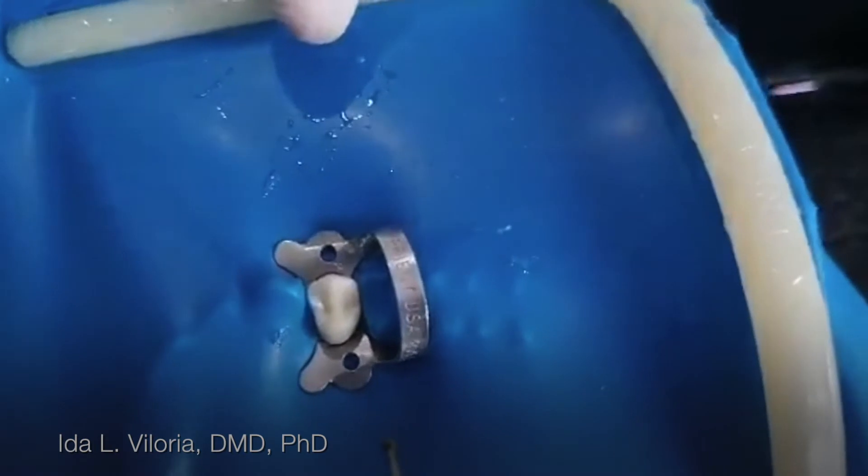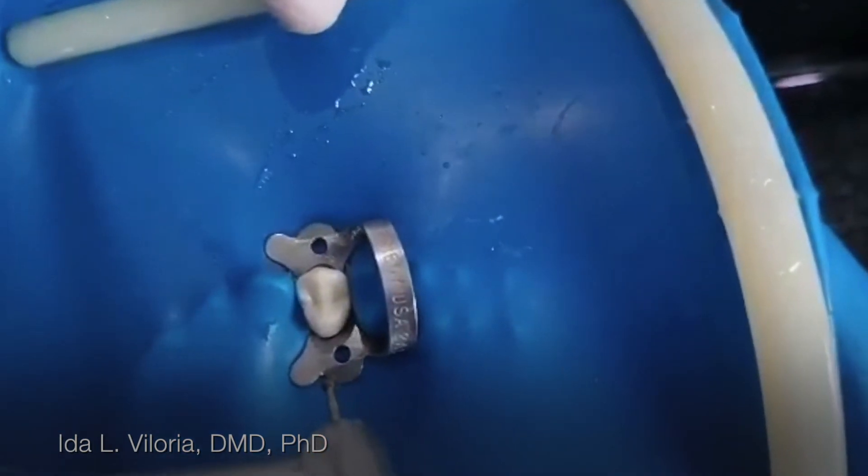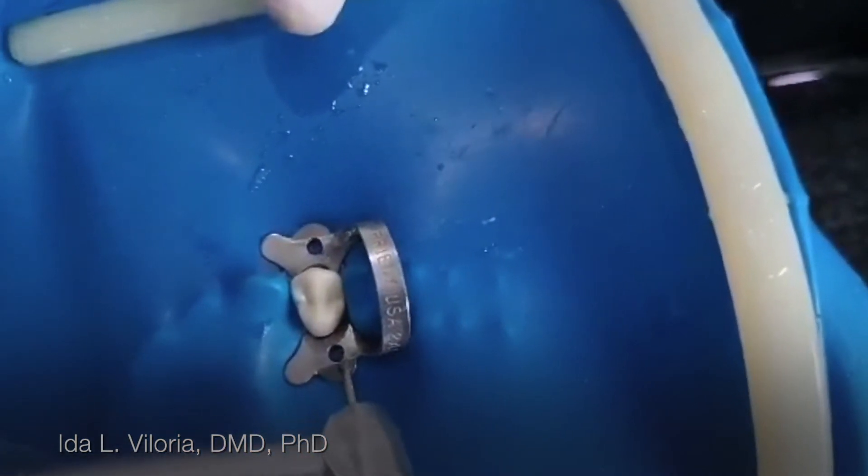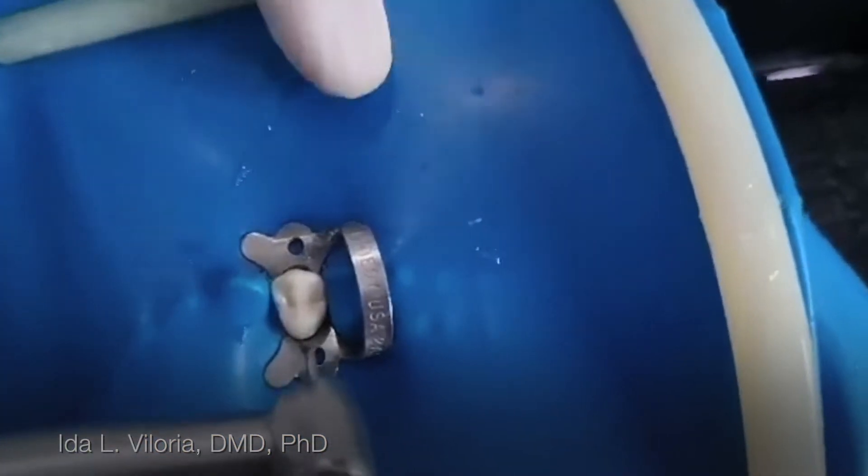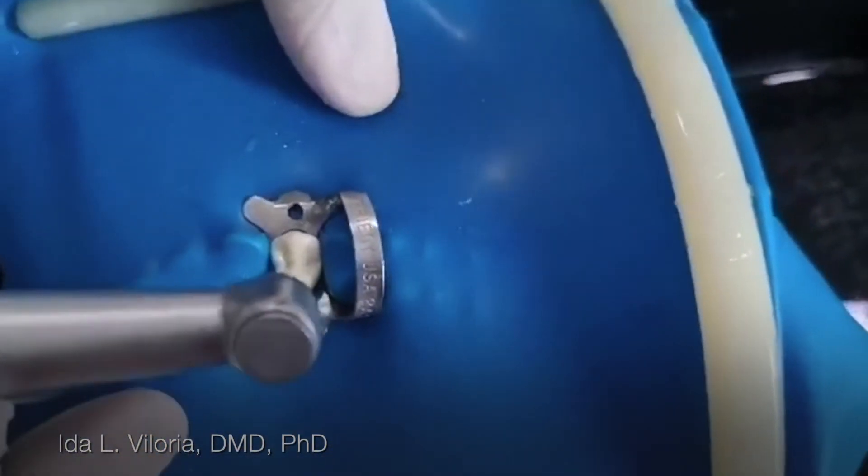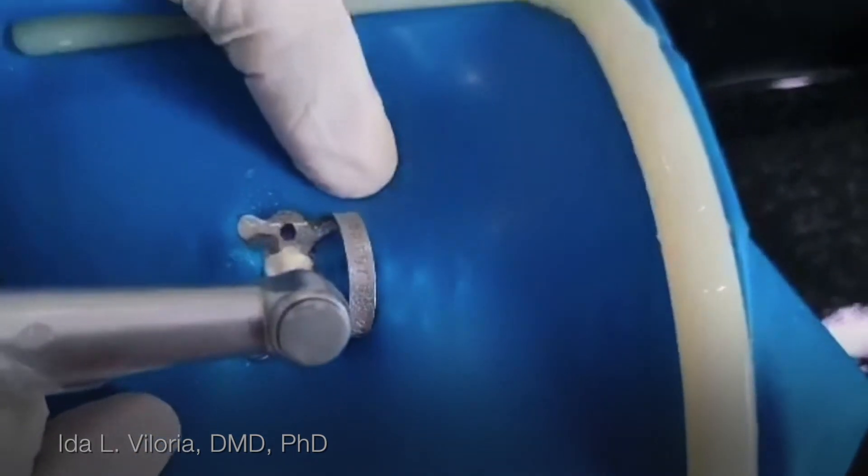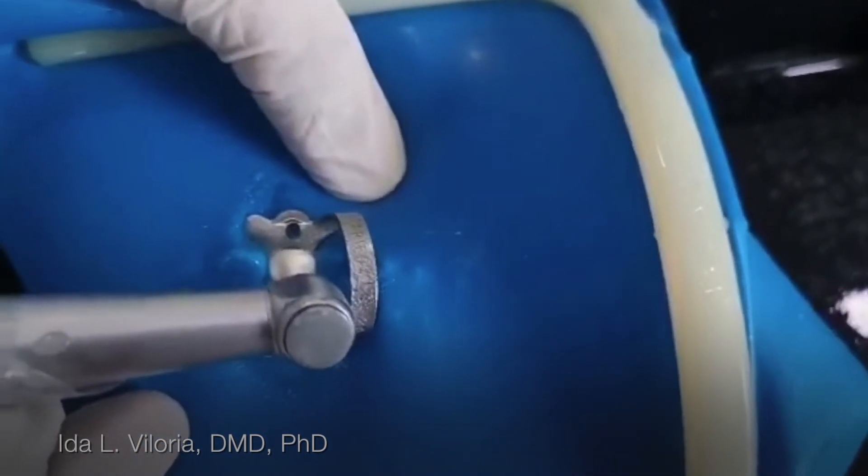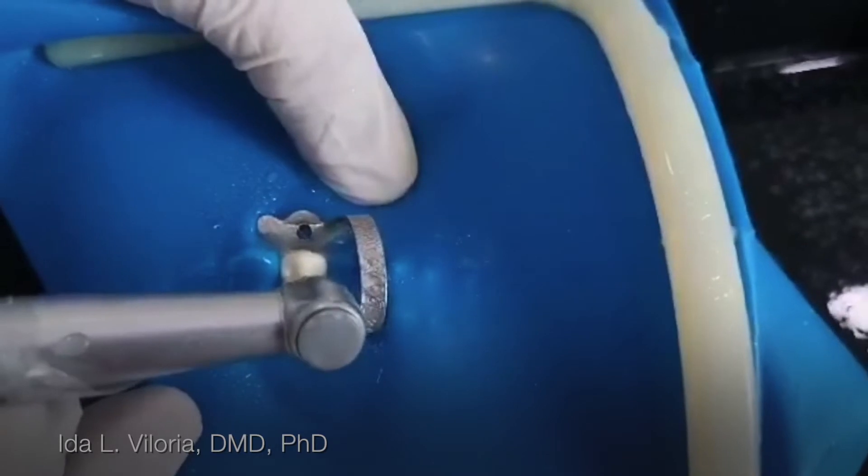I'm going to do access cavity preparation of maxillary first premolar using this typodont. I'll just have to start at the center. Start at the center using number two or number four roundburn.